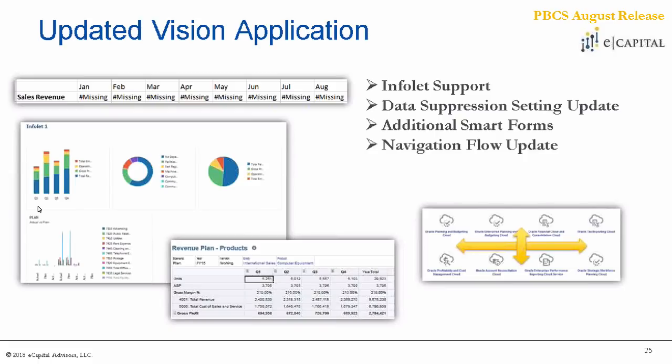The next thing coming to the vision application this month is a new setting available for administrators to apply. This setting allows or disallows users to enter data in web forms on rows that have been tagged as suppressed and missing. So when you set up your data form and there are suppressed and missing rows, typically a row with no data wouldn't be visible for input. This administrative-type function is now becoming available in the vision application.